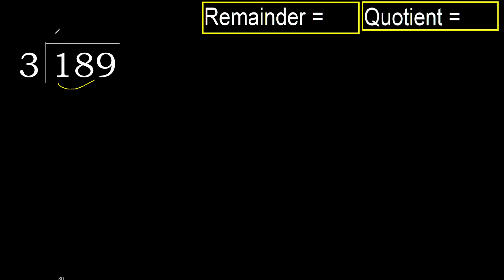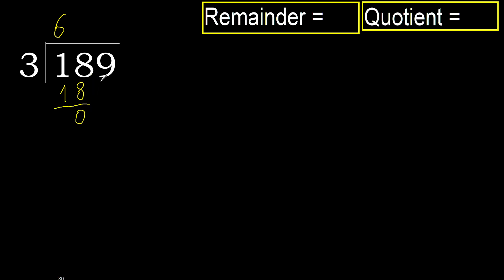3 multiplied by 7 is 21 — 21 is greater. Multiply by 6 is 18 — 18 is not greater. Subtract: 0. Next.